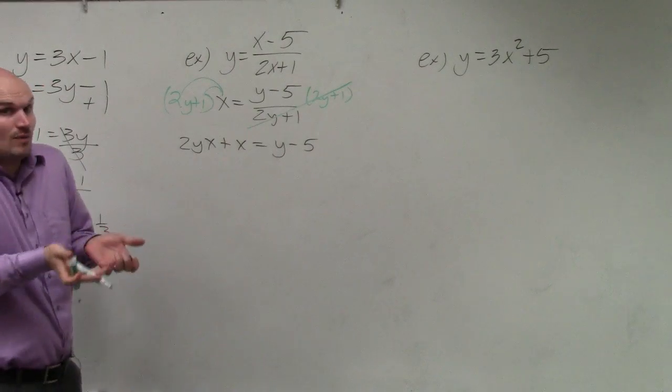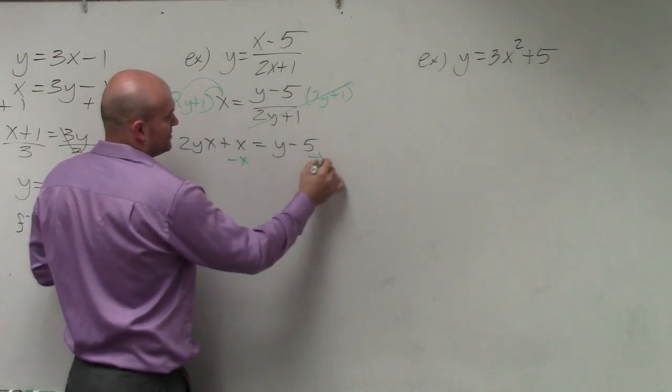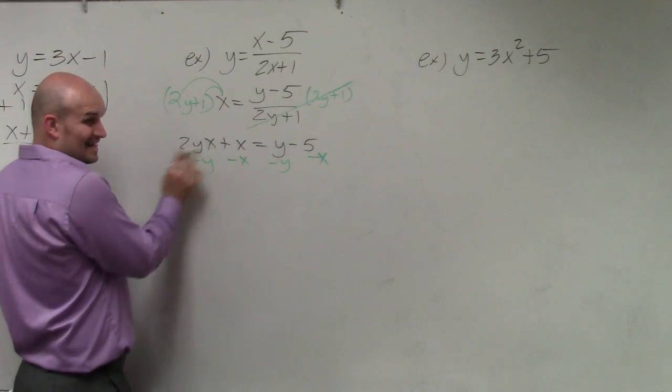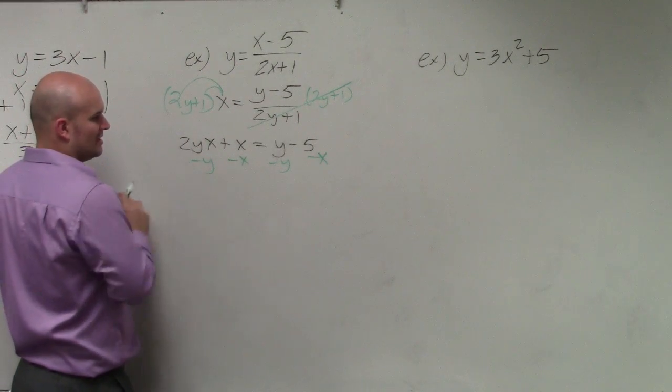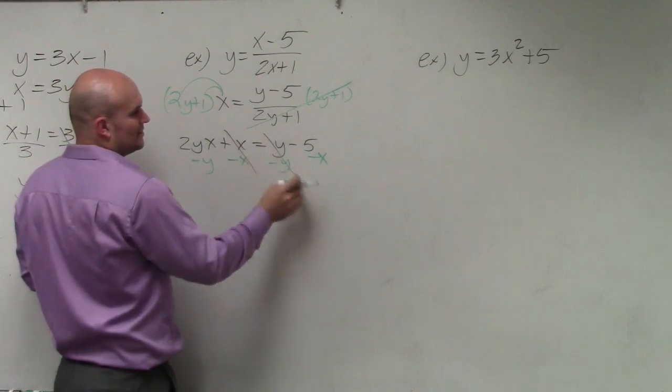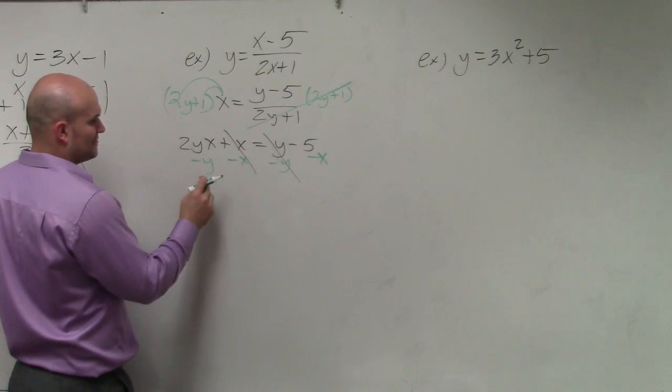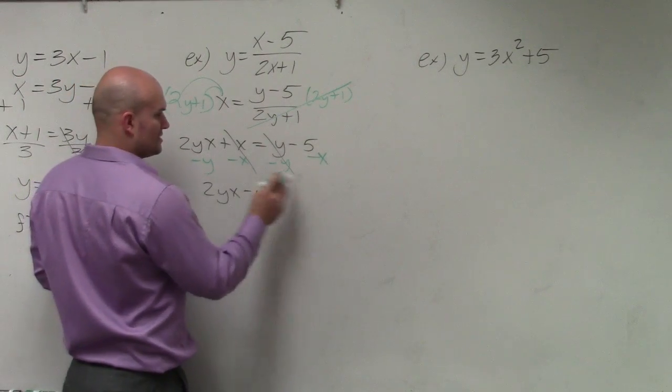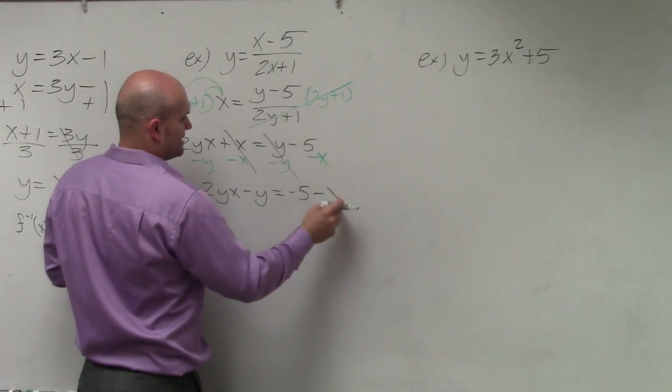And again, we need to get the y to the same side. So what I'm going to do is I'm going to subtract an x on both sides. And I'm going to subtract a y on both sides. Now I cannot subtract these because they're not like terms. But I can understand that's going to go to 0. That will go to 0. So I'm left with 2yx minus y equals negative 5 minus x.